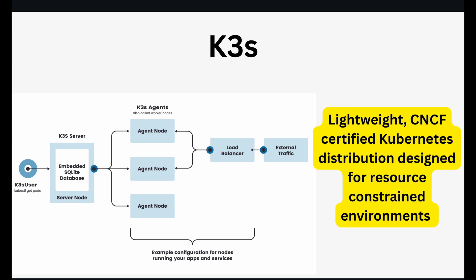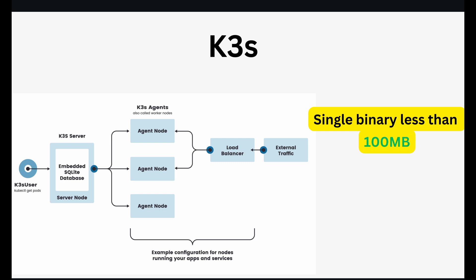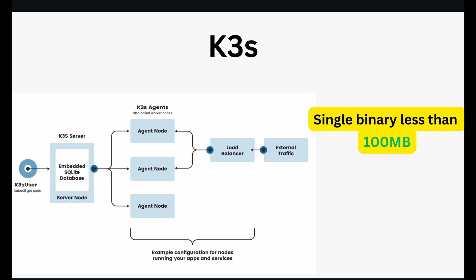K3s is the lightweight sibling of K8s. It is a CNCF-certified Kubernetes distribution designed specifically for resource-constrained environments. It is perfect for IoT, edge computing and CI/CD pipelines. K3s is a single binary and is less than 100 MB. It removes all non-essential features of the full-fledged K8s, making it incredibly easy to deploy and manage on low-power devices.